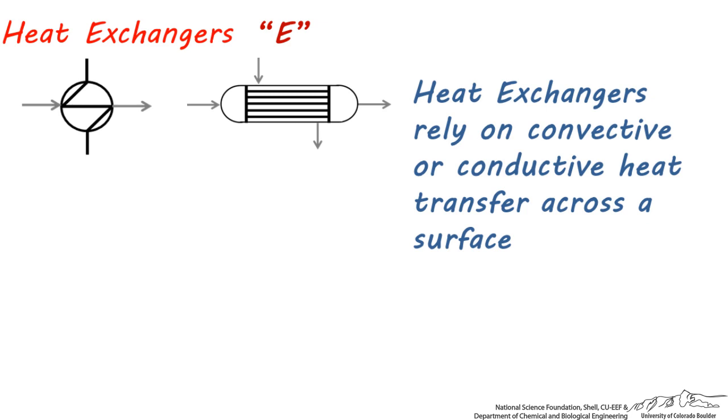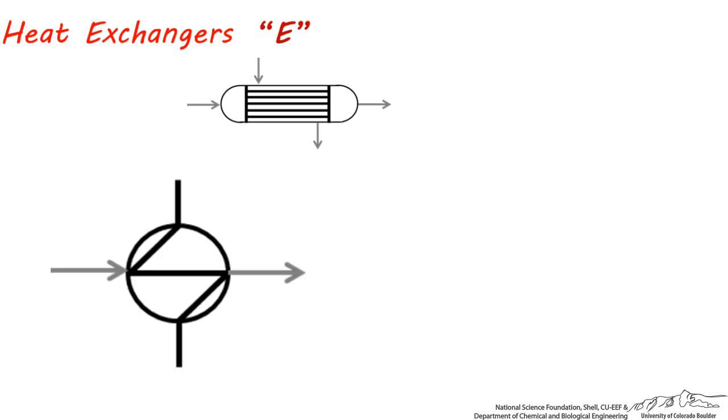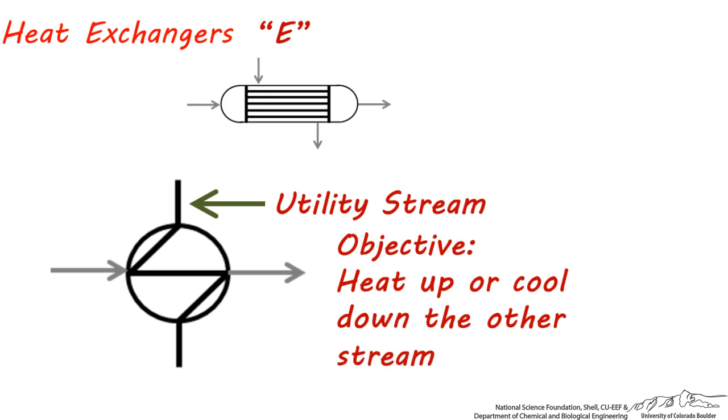Let's look at these two symbols more closely. This symbol is a general shorthand representation for a heat exchanger. There are two streams which go through a heat exchanger. One is represented by the black lines and the other with the gray. This black line zigzagging through the circle represents the utility stream. It's the job of the utility stream to heat up or cool down the other stream.